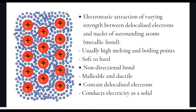The more protons and the more delocalized electrons, the stronger the attraction between those two, and therefore the stronger the metallic bond and the more energy and higher temperature is required to break that bond during melting and boiling. Mercury is an exception as it is a liquid at room temperature. Other metallic substances are solid at room temperature.